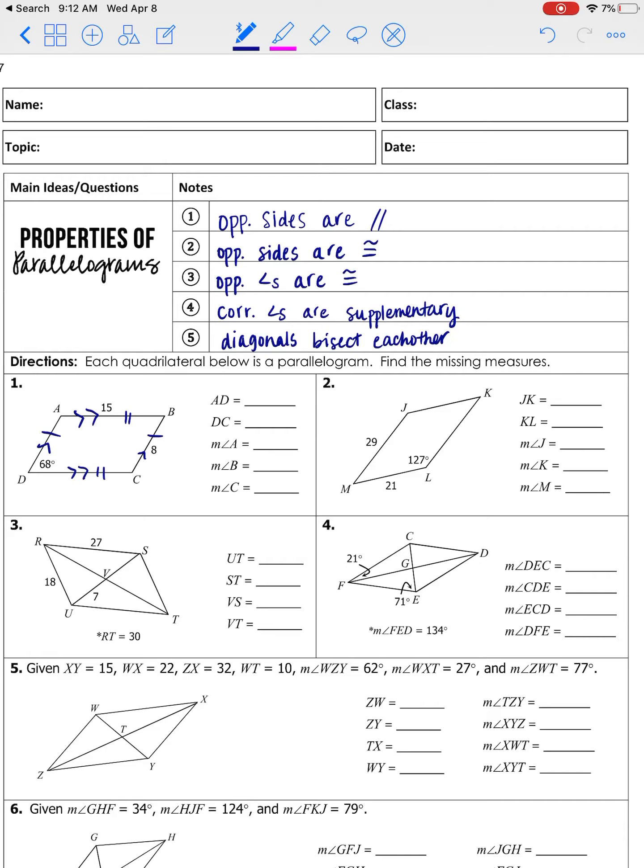Additionally, opposite angles are congruent. So D is congruent to B. A is congruent to C. So if you know D, you know B. If you know A, you know C, vice versa. And then this is really important. Corresponding angles are supplementary. So corresponding being like two that share a side. So A and D are corresponding. A and B are also corresponding. Which means A plus D is 180. A plus B is 180, which makes sense, because we already know that B and D are congruent.